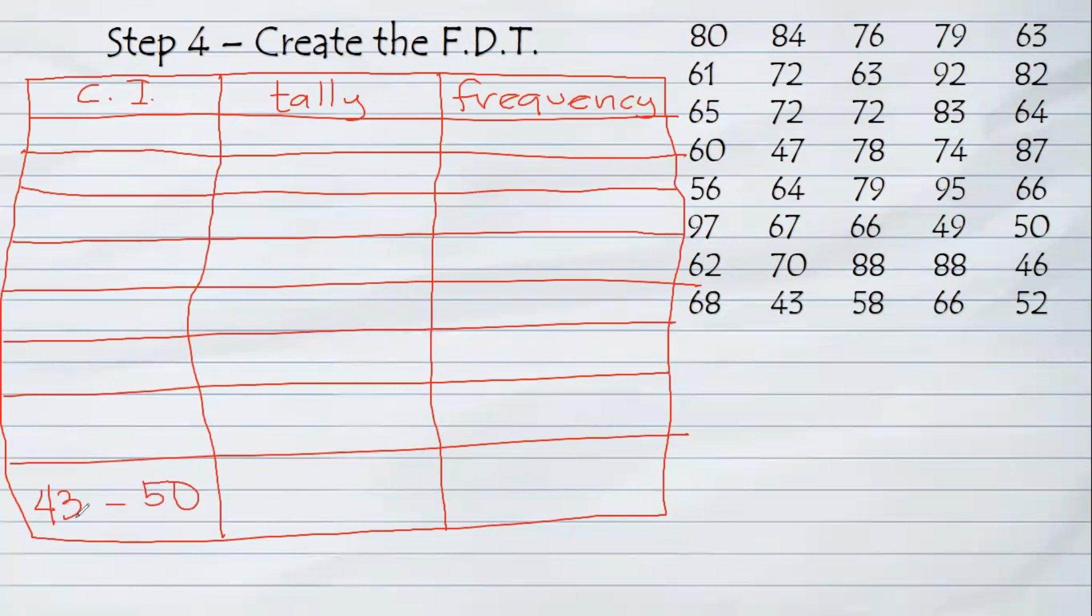So we have a class size of 8 units. Now, we will be starting on the next row in 51. Still the same process. We will be counting 8 units including 51. So 51, 52, 53, 54, 55, 56, 57, 58.